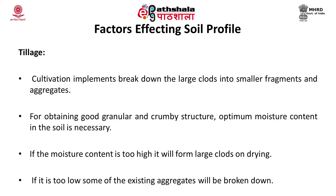The next factor is tillage. Cultivation implements break down the larger clods into smaller fragments and aggregates. For obtaining a good, granular and crumbly structure, optimum moisture content in the soil is necessary. If the moisture content is too high, it will form large clods on drying. If it is too low, some of the existing aggregates will be broken down.